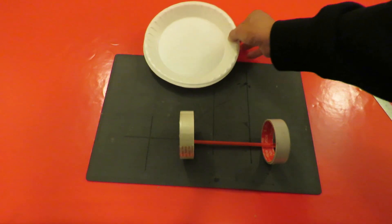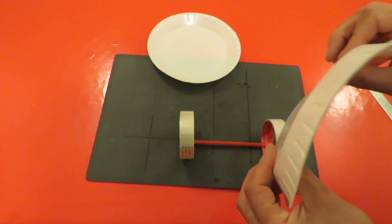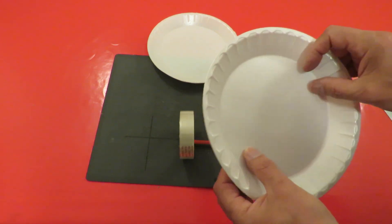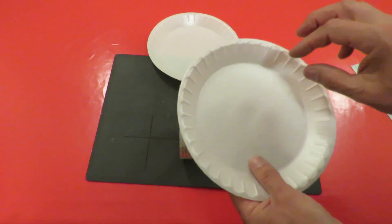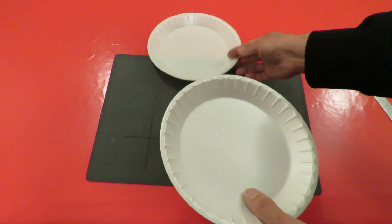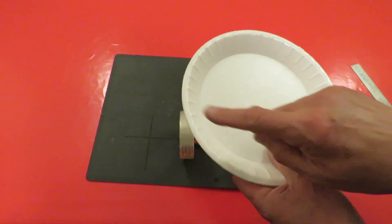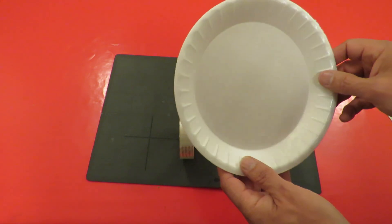Now these styrofoam plates, I need the flat bit from the middle, so it's not going to be very big. What I'll have to do is cut two up and join the pieces together to get a big enough ring, I think.